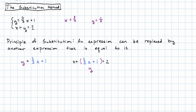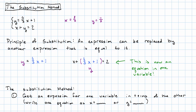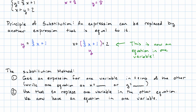It helps us because we've now combined our two equations to get one equation in one variable. We know how to solve that equation. This is the Substitution Method. First, we get an expression for one variable in terms of the other. In this problem, we were actually given that — one of our equations was in the form y equals stuff with an x in it. We used that to replace one of the variables in the other equation. We replaced y by stuff with x in it, so now we have an equation in one variable.